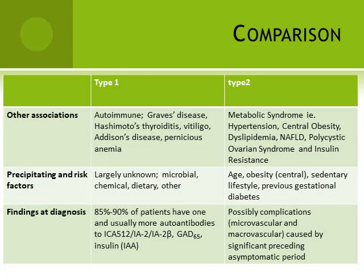Other associations: autoimmune diseases such as Graves' disease, Hashimoto's thyroiditis, vitiligo, Addison's disease, and pernicious anemia may be associated with type 1, since it is an autoimmune process. For type 2, associations include features of metabolic syndrome: hypertension, central obesity, dyslipidemia, non-alcoholic fatty liver disease, polycystic ovarian syndrome, and insulin resistance. Precipitating and risk factors are largely unknown for type 1, while for type 2 they include age, central obesity, sedentary lifestyle, and previous gestational diabetes.